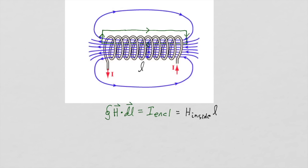Our coil is of length L and has N turns. The current enclosed will be the current going through the surface defined by our path of integration. The coil pierces that surface N times, and each time it pierces there's a current flowing into the page. So the current enclosed will be the number of turns times the current I flowing in the coil. We have to use the right-hand rule when applying Ampere's circuital law: we put the fingers of our right hand in the direction of integration, and our thumb points into the surface defined by the path. The current is flowing in the direction of our right thumb, so the current enclosed is positive.